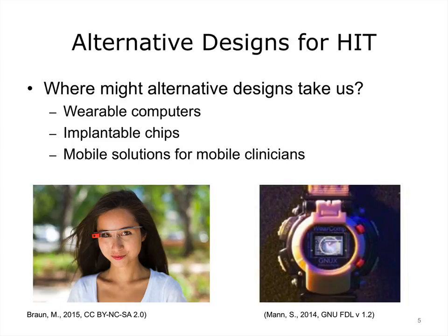Moving away from wearable computers and into architecturally embedded monitoring technologies — sometimes referred to as smart homes — can we help older patients stay in the home longer by monitoring things like the stove being left on, alterations in walking patterns, tracking if the refrigerator is being opened and closed as a proxy for eating behaviors, and if an early-stage dementia patient has started wandering outside of the home? The other side of the coin is that many people have serious concerns about invasion of privacy. Perhaps an elderly person might consider this a reasonable tradeoff for being able to continue to live independently for a longer period of time.